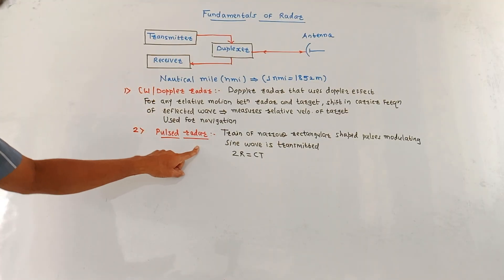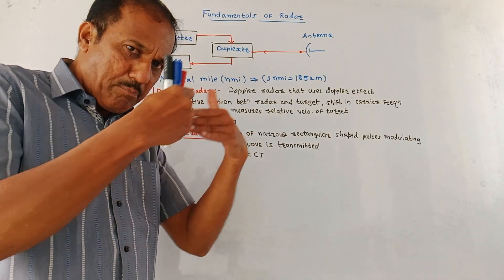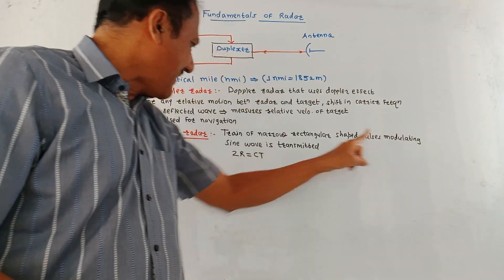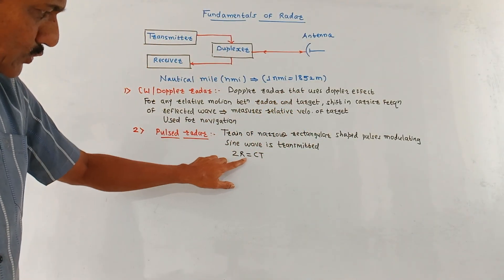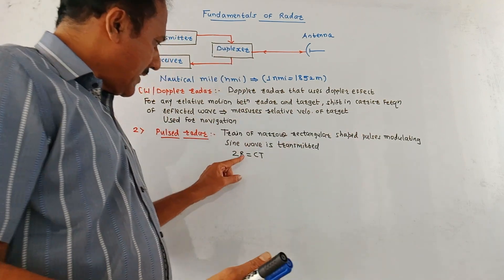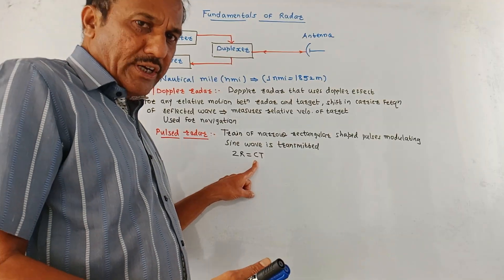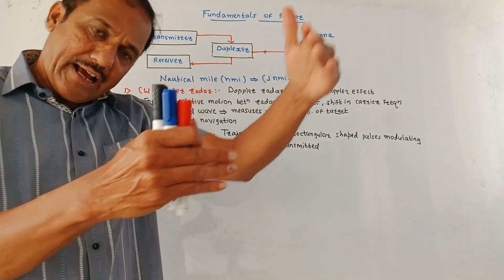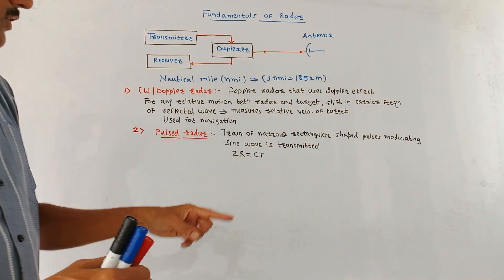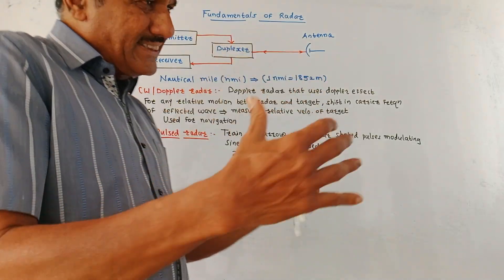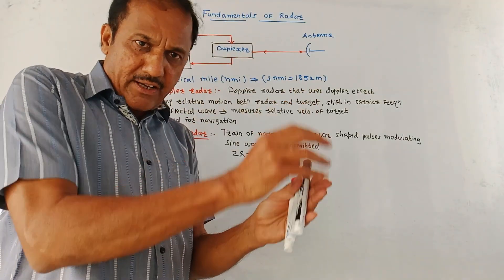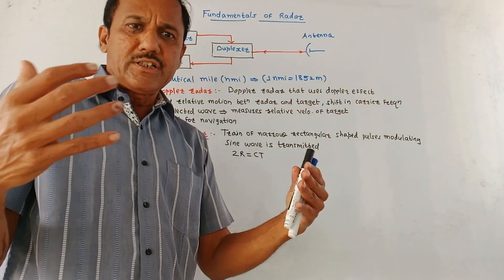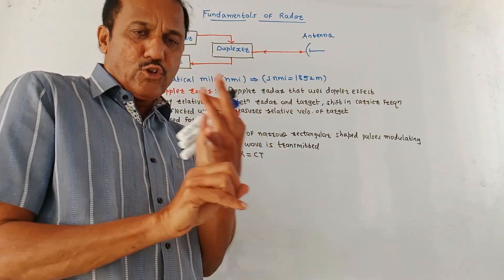The second type is pulse radar. As the name indicates, this type of radar system transmits pulses instead of a continuous wave. A train of narrow, rectangular-shaped pulses modulating a sine wave is transmitted. In this case, the equation is 2R = C × T, where R is the range or distance, C is the speed of light (3 × 10⁸ m/s), and T is the time required for the pulse to travel from the transmitter to the target and back to the receiver. Once the target is detected, by knowing the time period and the speed of light, we can calculate the distance of the target from the radar system.